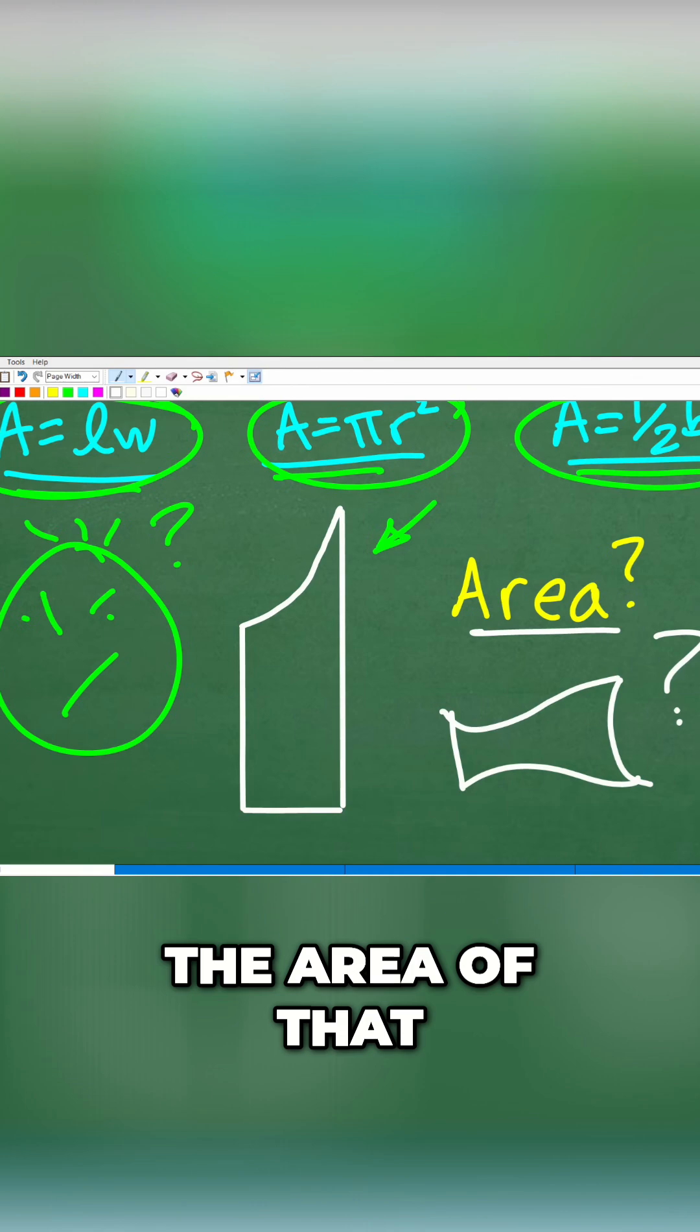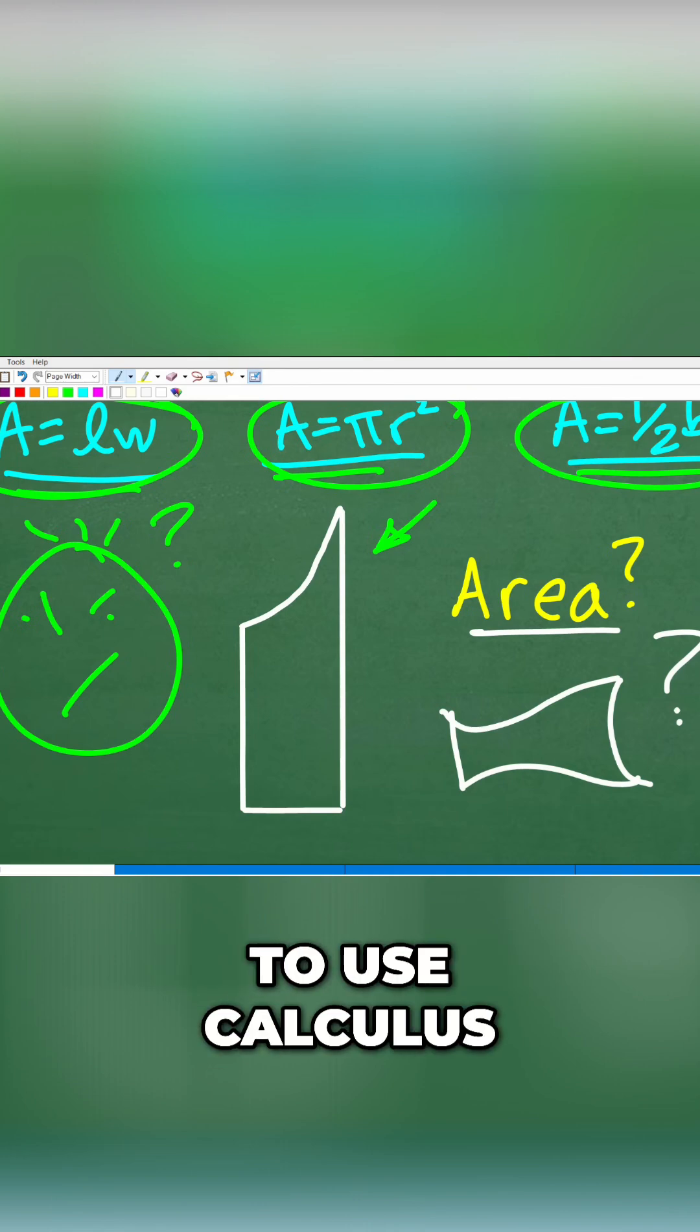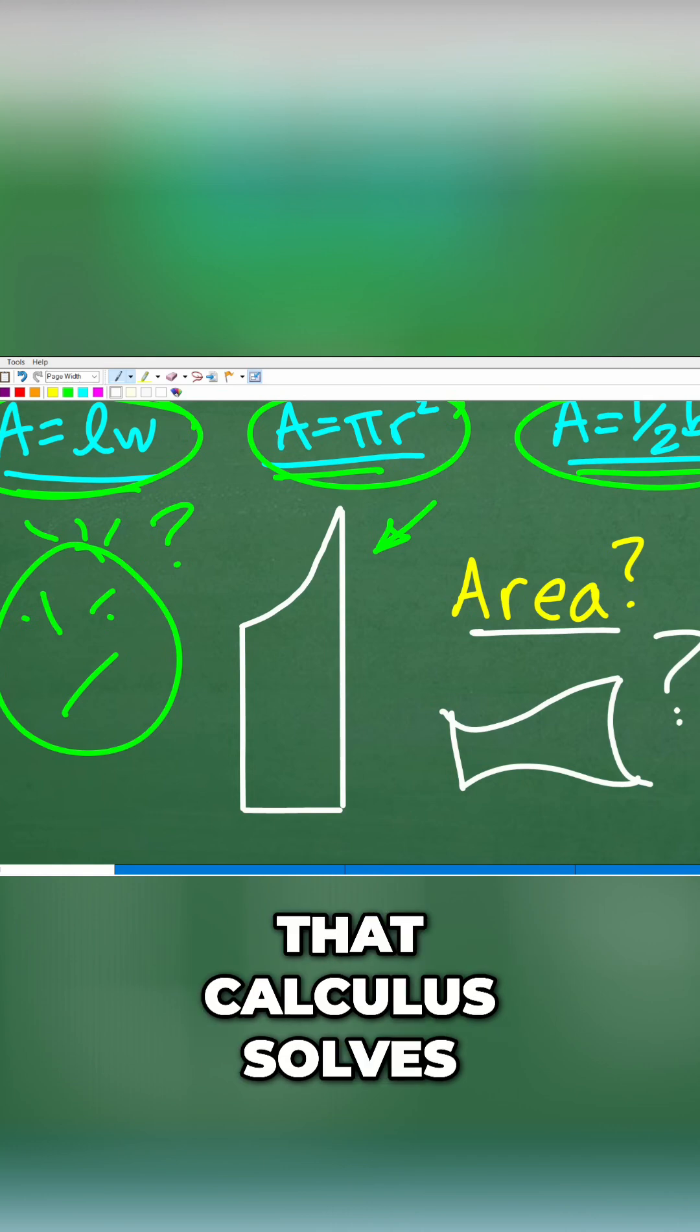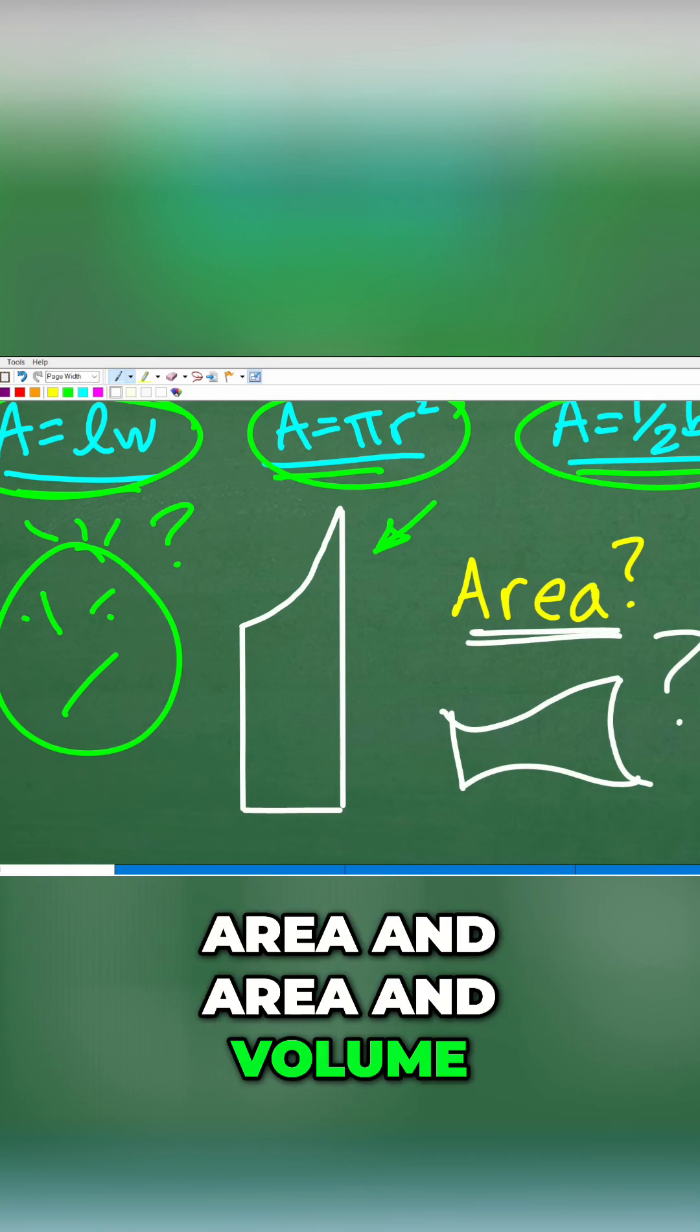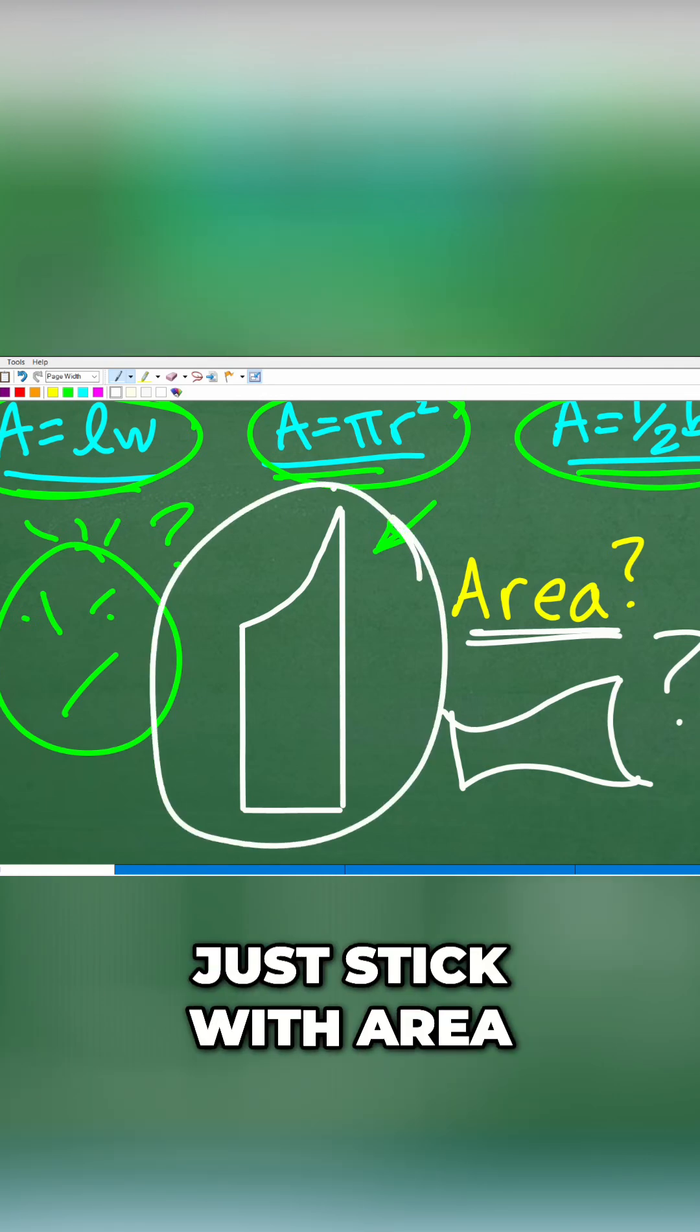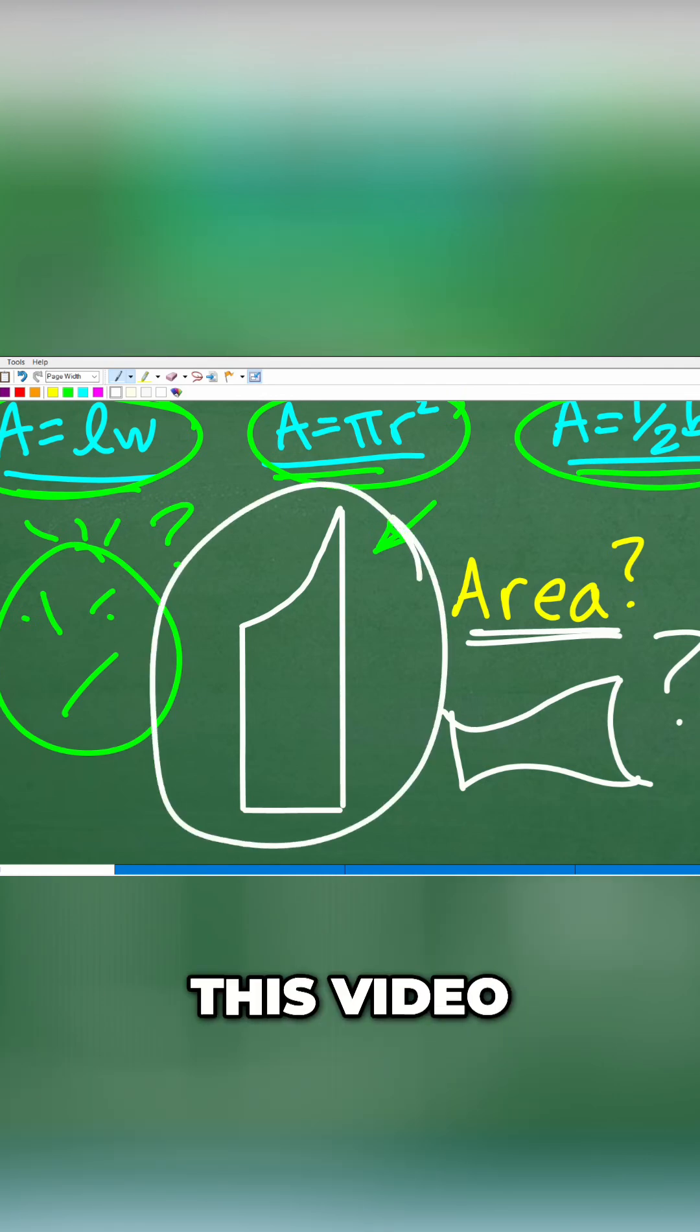You're like, wow, how do we find the area of that? Well, we're going to need to use calculus. So this is the number one... Well, there's two big problems that calculus solved, one of which is area and volume. It kind of goes beyond area, but we're going to just stick with area for the purpose of this video.